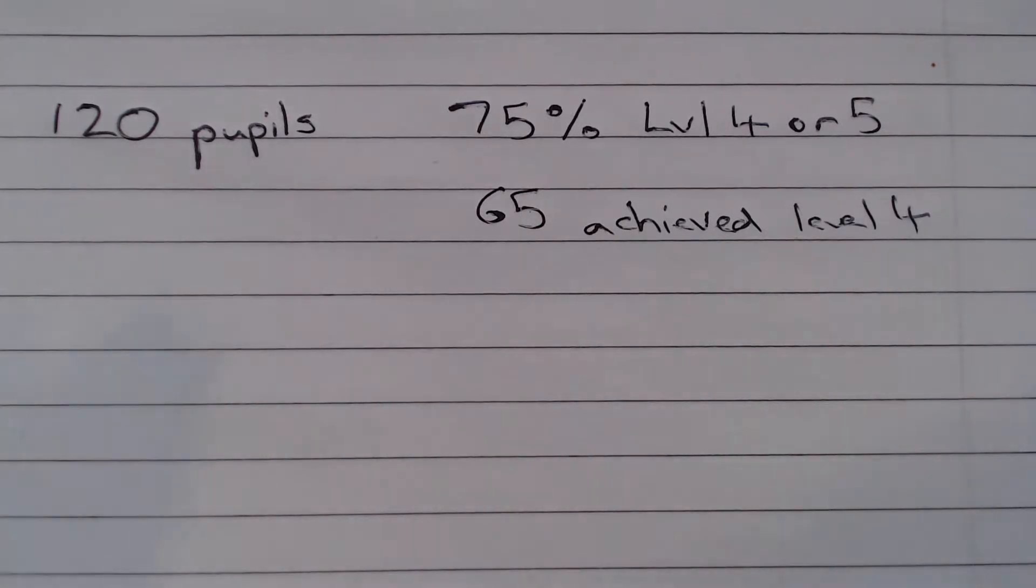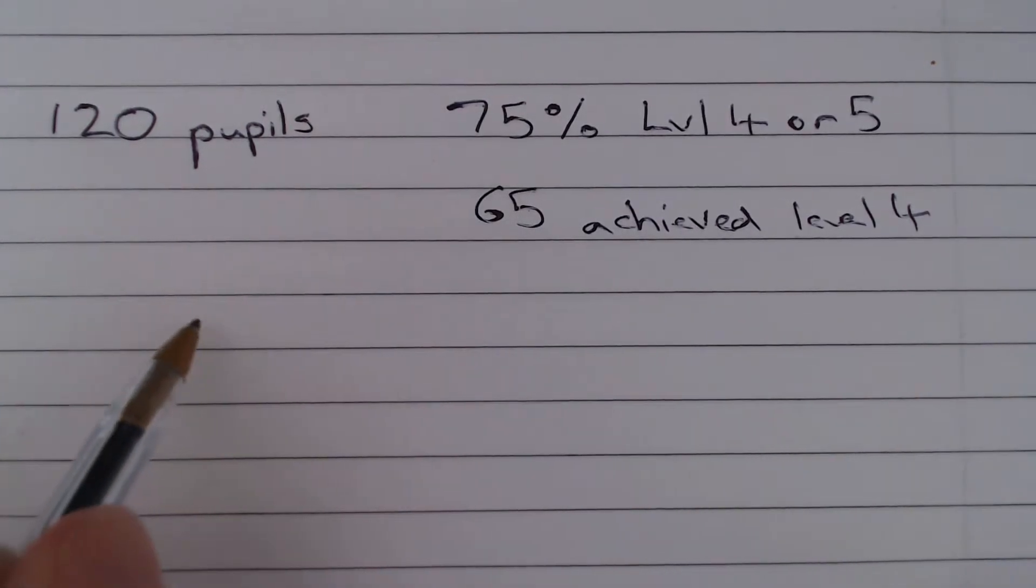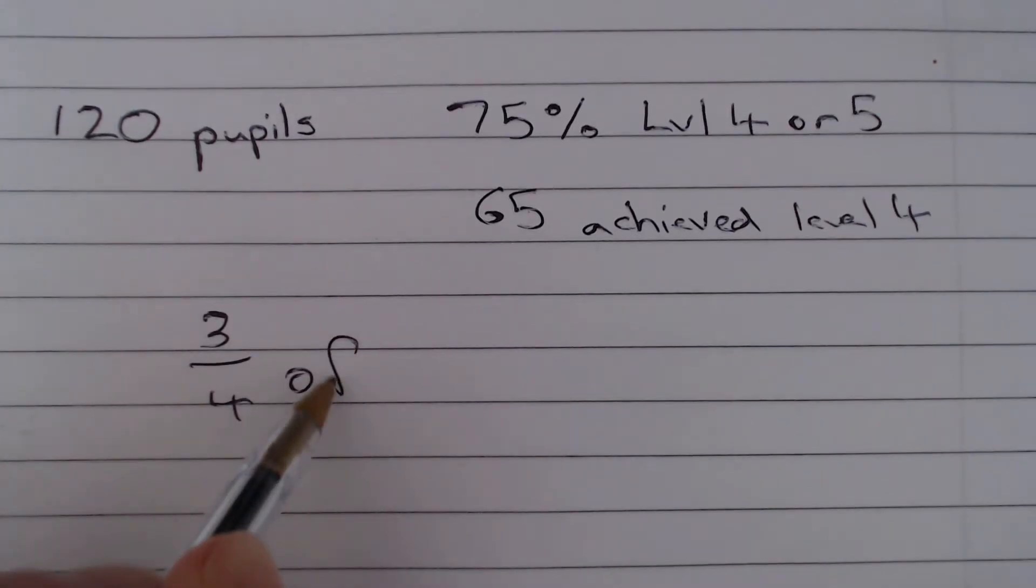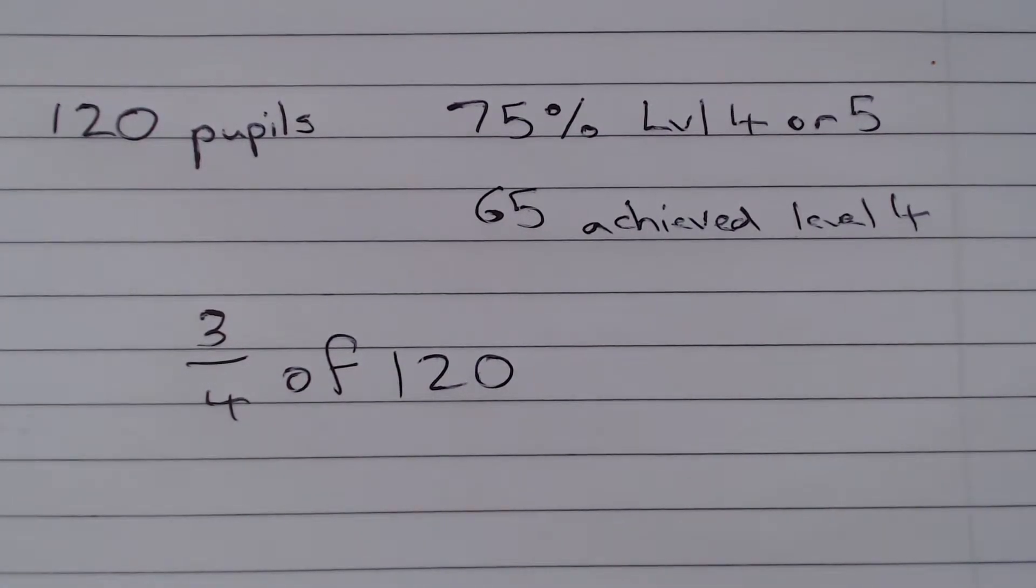is I would notice 75% is 3 quarters. So this is the same as working out 3 quarters of 120. Well 120 divided by 4 gives us 30, times by 3 gives us 90.